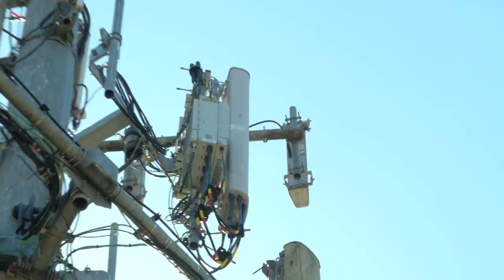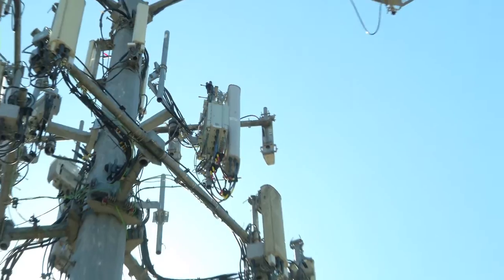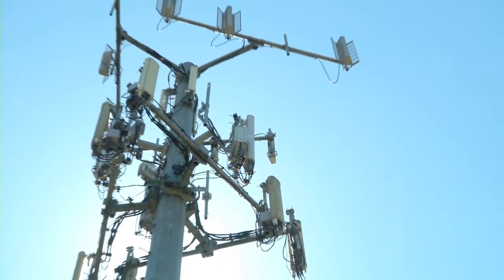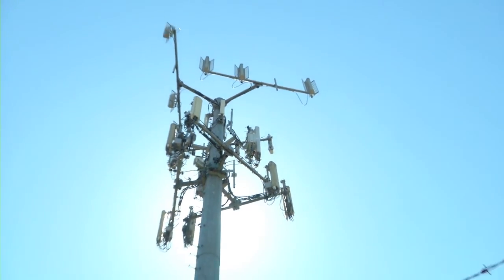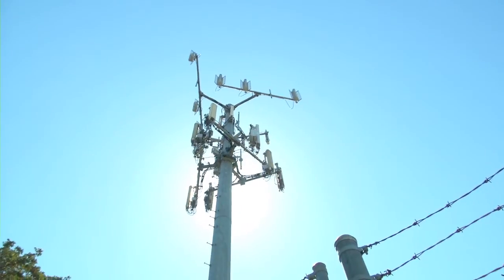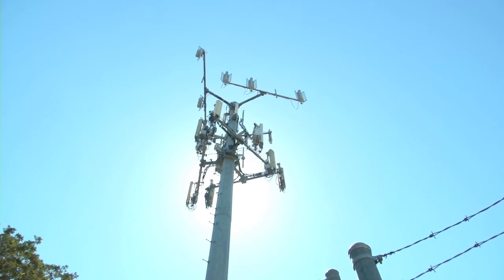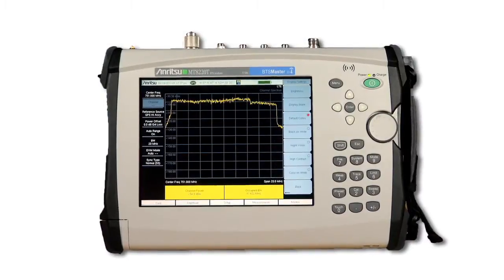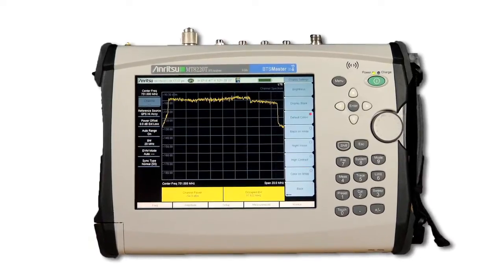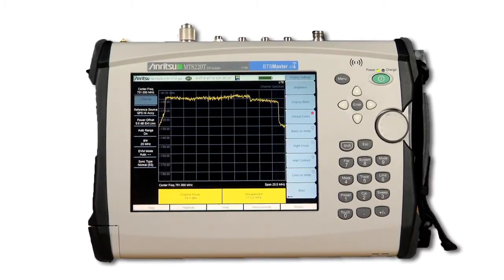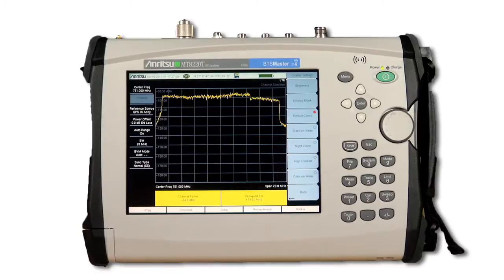The use of Multiple Input-Multiple Output, or MIMO, complicates the process of measuring eNode B power and modulation quality in LTE systems. Spectrum analyzers only have one receiver, whereas two or more receivers are needed for complete demodulation of data traffic channels.